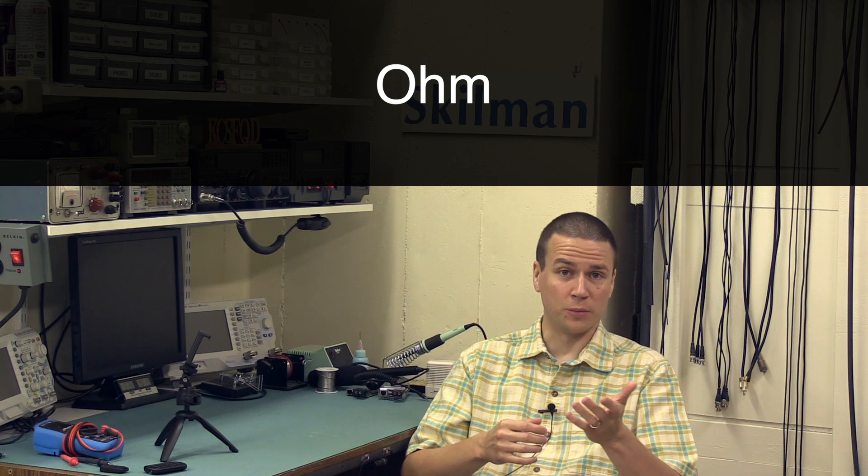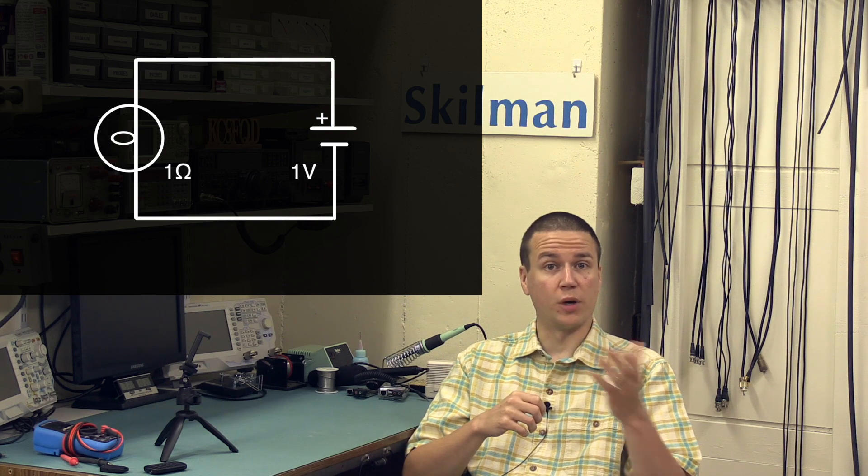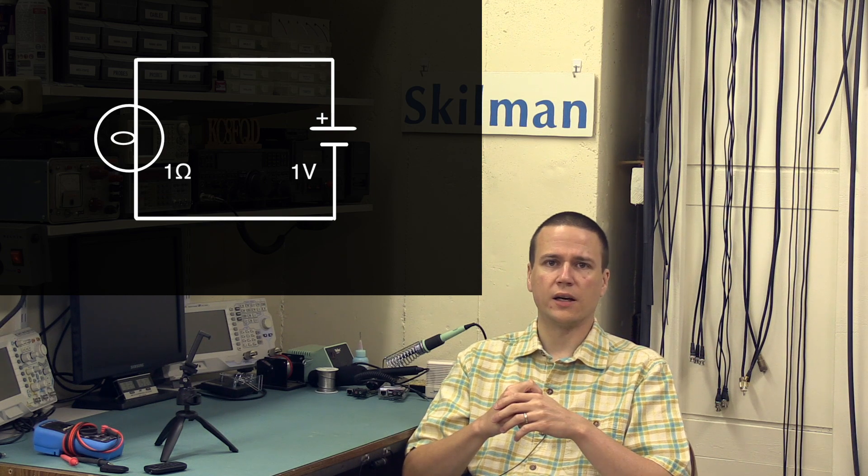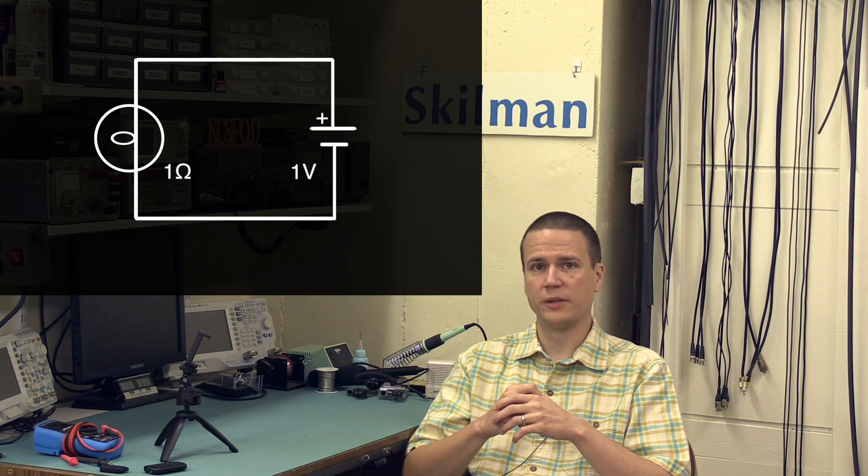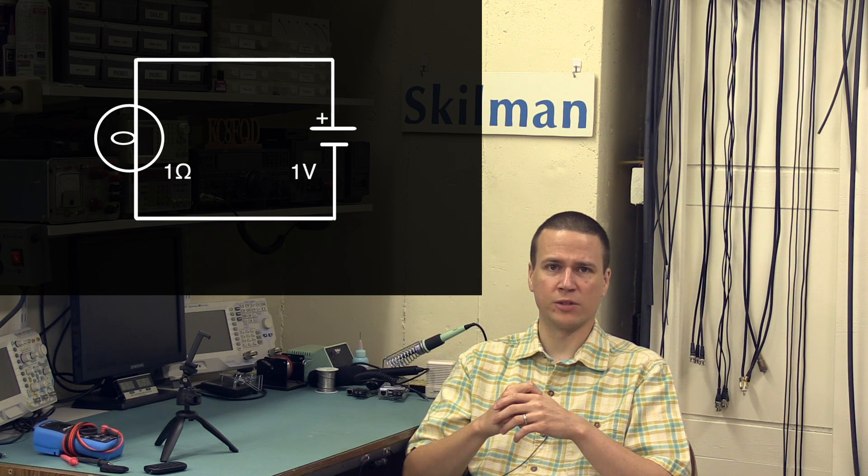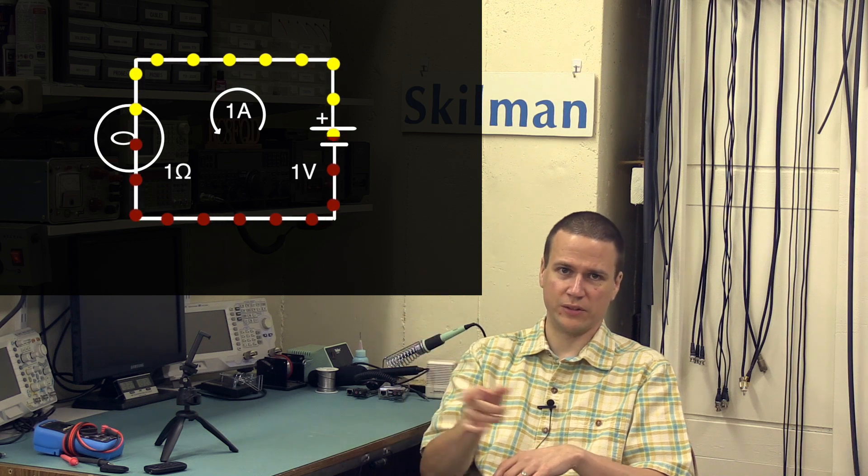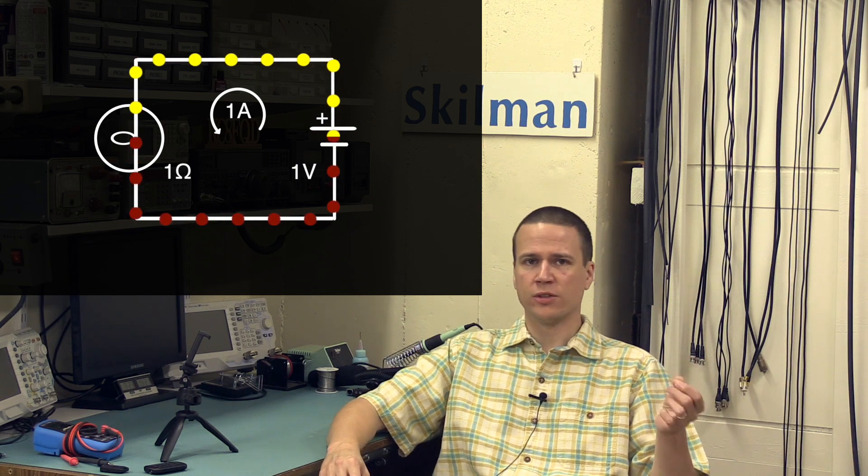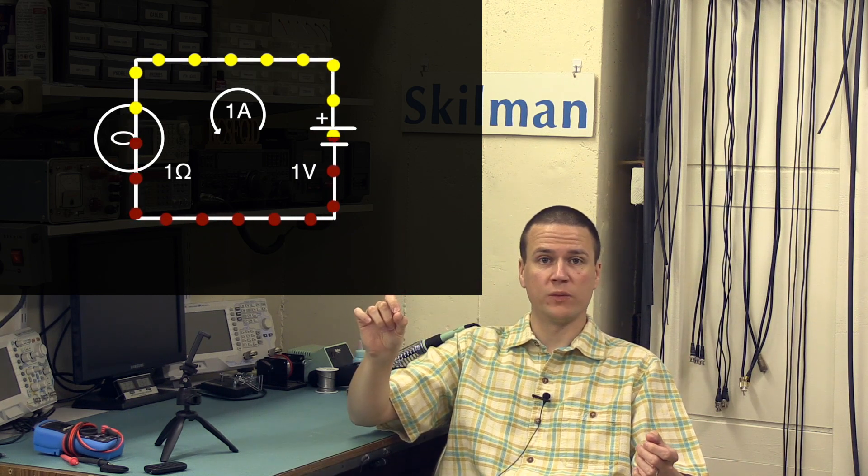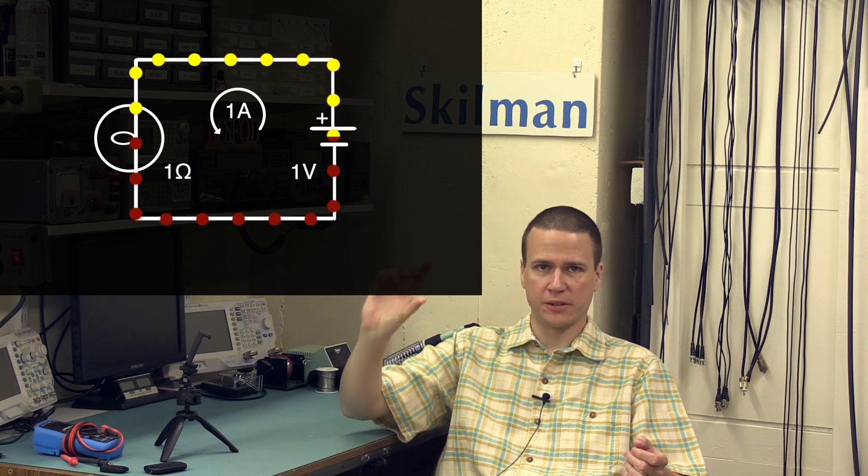So, what's an ohm? Suppose we have a battery, and we'll draw it like this, and that can provide an electromotive force of one volt. And suppose we connect it to a light bulb, which we'll draw like this, and that has a resistance of one ohm. An electromotive force of one volt will be sufficient to cause one ampere of current to flow through the resistance of one ohm. Another way to look at it is that one ampere of current flowing through a resistance of one ohm results in a potential difference of one volt.